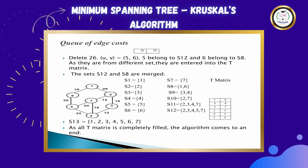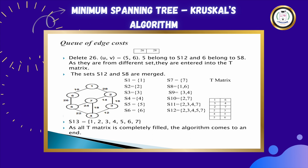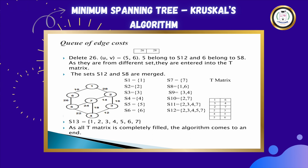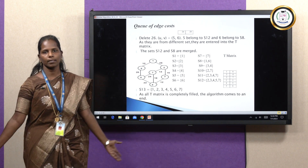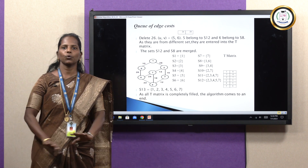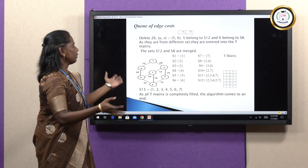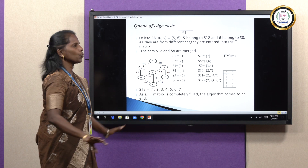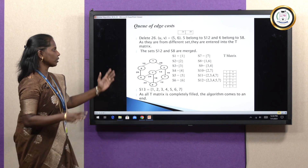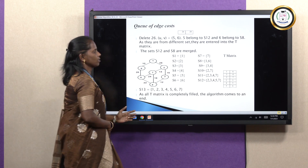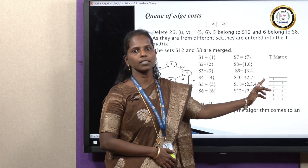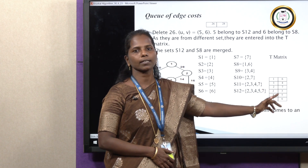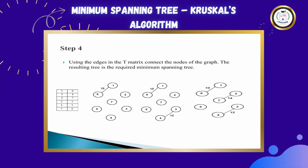The next value is 28. The nodes associated with 28 are 1 and 2. 1 and 2 are in the same set, so since they are in the same set they may form a cycle. Now our Q is empty and we have the completed T matrix. These are the edges we have to consider to construct the minimum spanning tree.